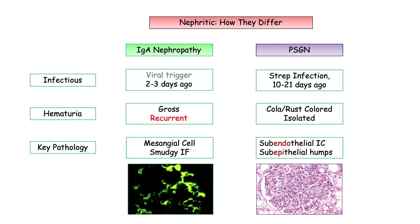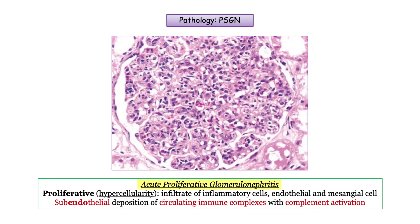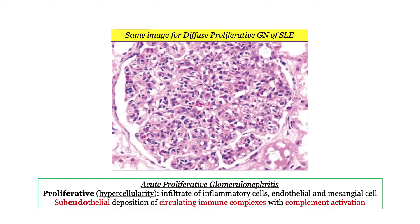Now let's get into the more complex pathology of post-streptococcal glomerulonephritis — acute proliferative glomerulonephritis. This is another graphic you will need to recognize. The phrase proliferative refers to the hypercellularity, which includes the presence of inflammatory cells as well as endothelial and mesangial expansion. What's driving this process is the sub-endothelial deposition of circulating immune complexes with complement activation. Be aware that acute proliferative glomerulonephritis is not specific to post-streptococcal — light microscopy would be identical in a patient with SLE.